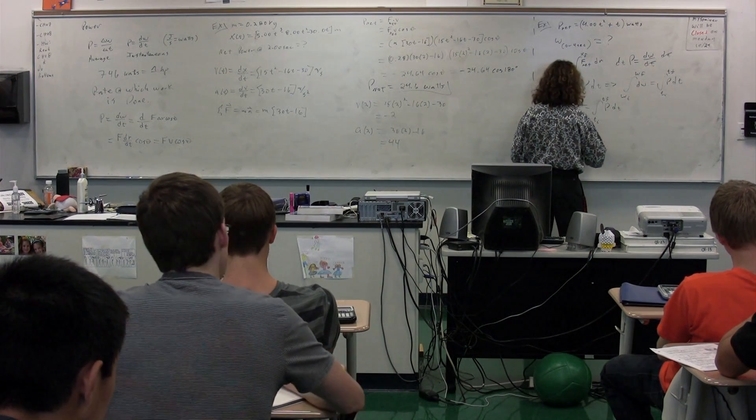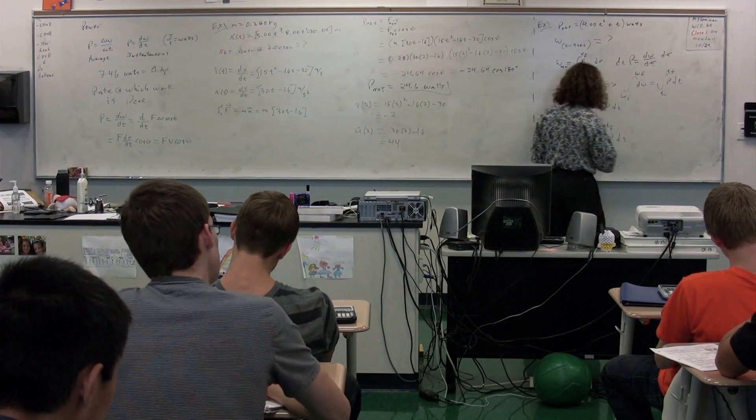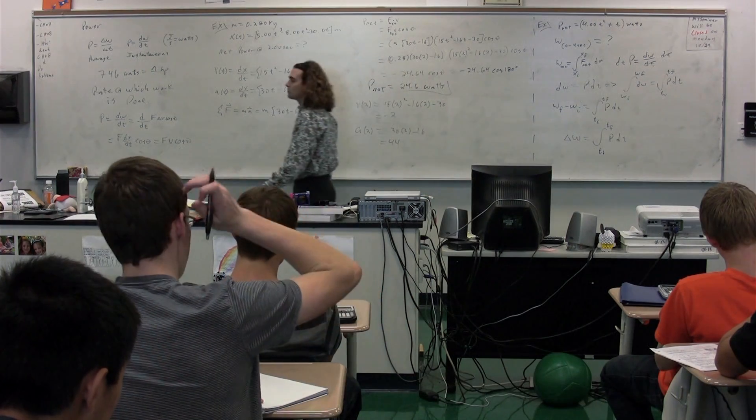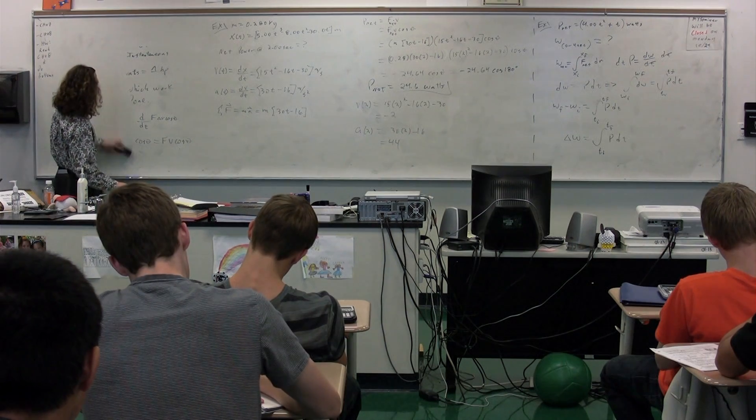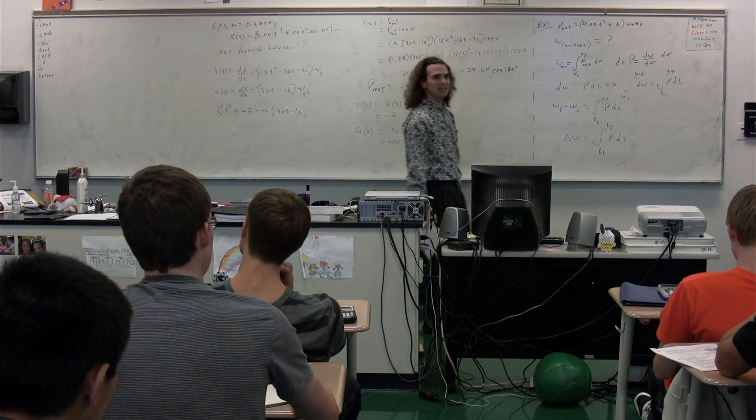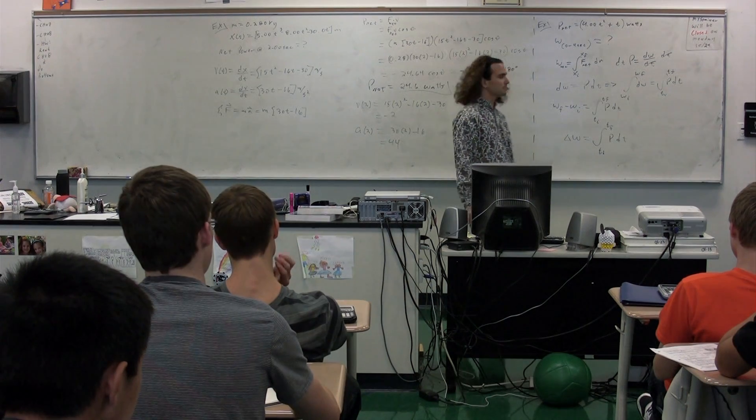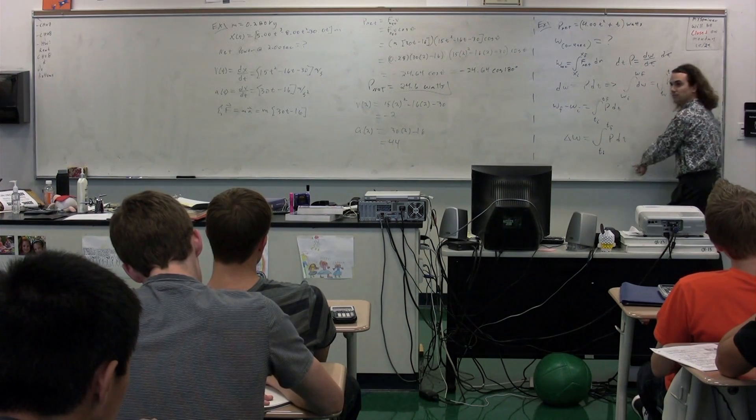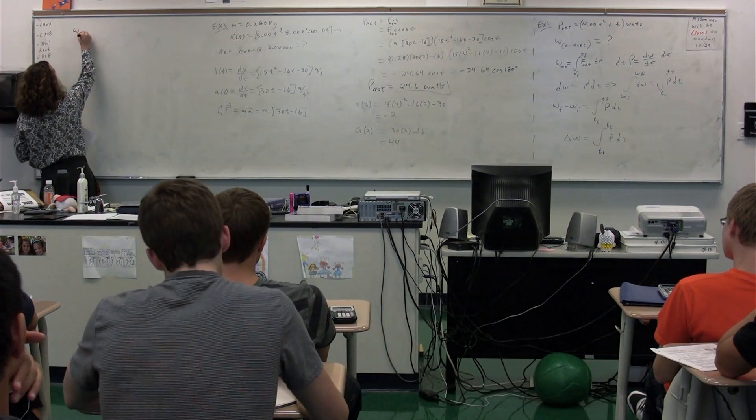In other words, delta w, the change in work from time initial to time final, is equal to the integral from time initial to time final of power with respect to time. So notice, what we've done here is we've taken a derivative equation and rearranged it into an integral equation. Because what is the other term for integral? Anti-derivative. So we can just reverse it. Please realize any time you have a derivative, you can also have an integral. So now we can figure out the work from 0 to 4 seconds.